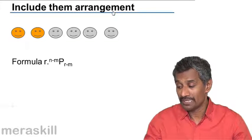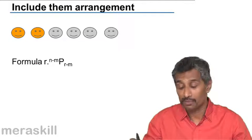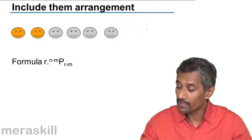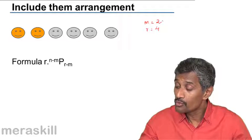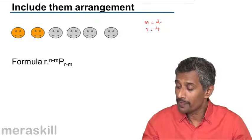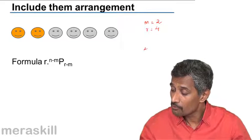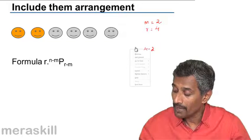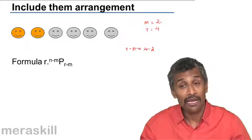For example, in these include arrangements, out of these 6, 2 always have to be included. That means you have to pick up 4. You need to pick up 4 out of these 6 such that 2 are always included. Since 2 are already picked up, the number you still need to pick up is 4 minus 2. That means you need to pick up only R minus M items, because out of R, M have already been picked up.